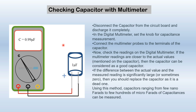Checking a capacitor with a digital multimeter. First, disconnect the capacitor from the circuit board and discharge it completely. Set the digital multimeter knob to the capacitance setting. Connect the red probe to the positive terminal and the black probe to the negative terminal of the capacitor. Check the reading on the display. If the multimeter reads a value very close to the rated value, the capacitor is good. If the difference between the actual and measured value is very large, the capacitor is dead and should be replaced. Using this method, capacitors ranging from a few nanofarads to a few hundred microfarads can be measured.